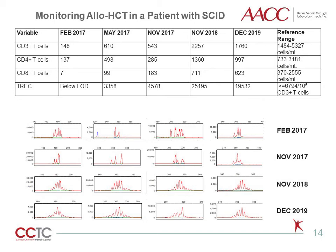The tests used to identify patients with SCID can also be used to monitor the reconstitution of T-cells by the thymus after HSCT. Here you can see the course of events over a 34-month period in a SCID patient who has undergone HSCT. The ordered tests include T-cell enumeration, TREC, and TCRV-beta spectrotyping. Between February 2017 and November 2018, there is a gradual increase in T-cell numbers and TREC results until they all fall into the normal reference range, with a parallel increase in the diversity of TCRV-beta repertoire. Follow-up testing in December 2019 is to confirm that T-cell reconstitution is sustained, with monitoring continuing over time based on the outcome of each assessment.